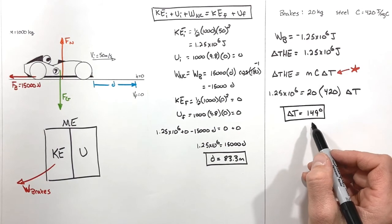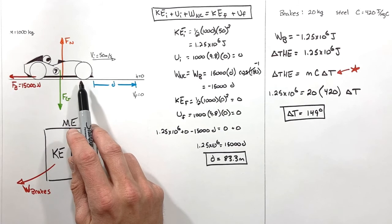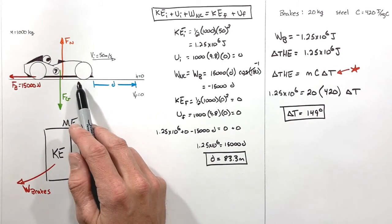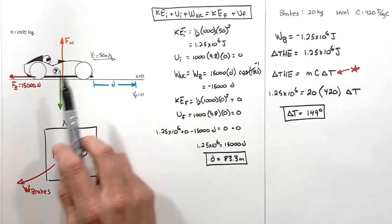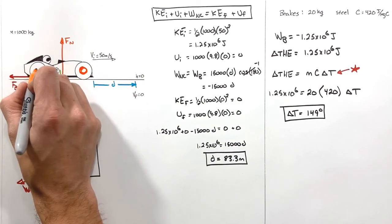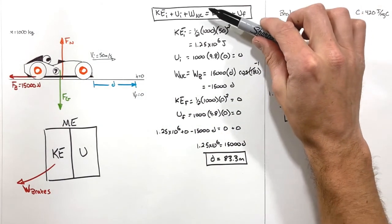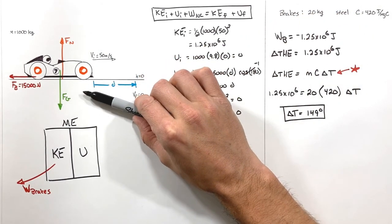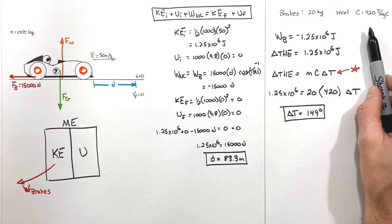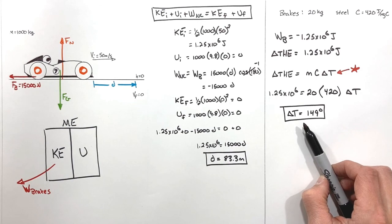That's a lot. Car brakes are actually designed to dissipate heat, because if they heat up too much they can fail. If you watch a race car at night, you can actually see those brakes glow — they get so hot they start to glow. In this problem, we've replaced Newton's second law and kinematics with the work-energy theorem, and tied in specific heat from chemistry to determine how much the brakes heat up.